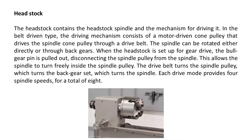When the headstock is set up for gear drive, the ball gear pin is pulled out, disconnecting the spindle pulley from the spindle. This allows the spindle to turn freely inside the spindle pulley. The drive belt turns the spindle pulley, which turns the back gear set, which turns the spindle. Each drive mode provides four spindle speeds, for a total of eight.